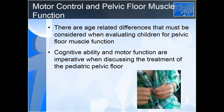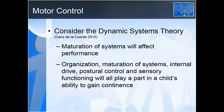Cognitive ability and motor function are imperative when discussing treatment of pediatric pelvic floor. With a cognitively impaired child, you may not get as far as you want with continence, but in talking to parents, you may be able to work with behavioral techniques to improve their success rate. You also want to look at dynamic systems theory — maturation of systems will affect performance. We need organization, proper maturation of systems, and internal drive. If a child is not motivated to toilet train, no reward or sticker chart will push them.